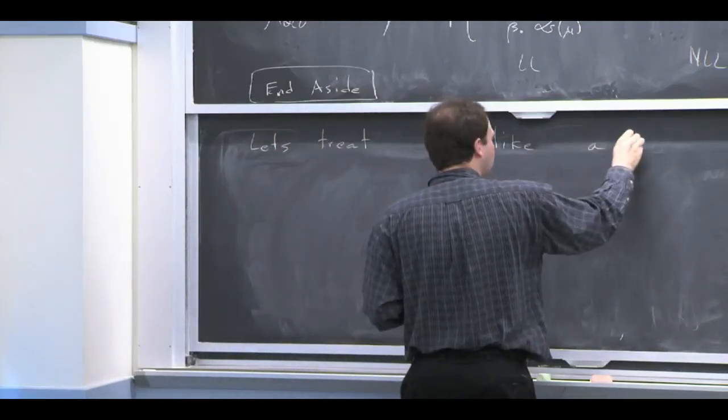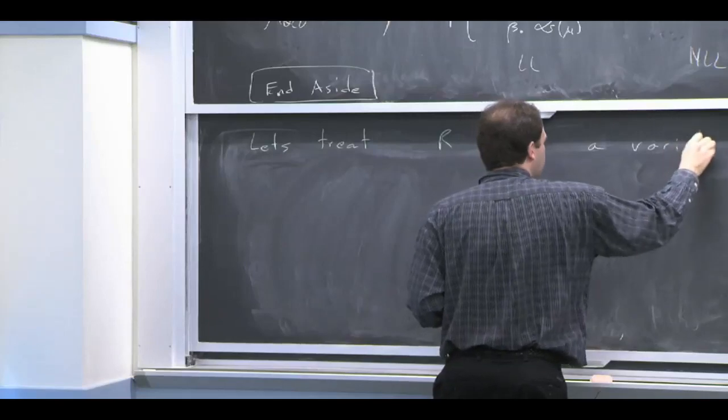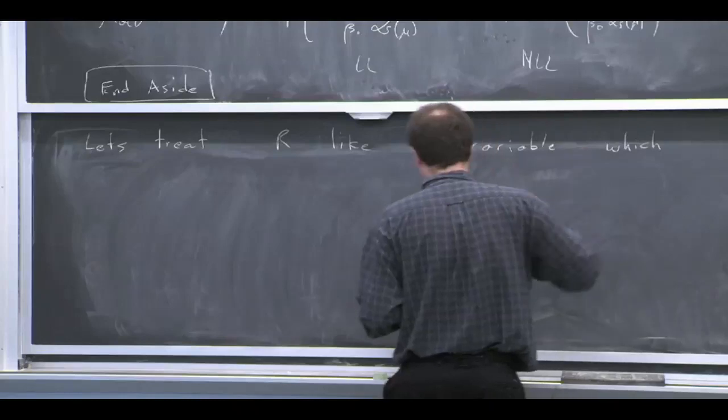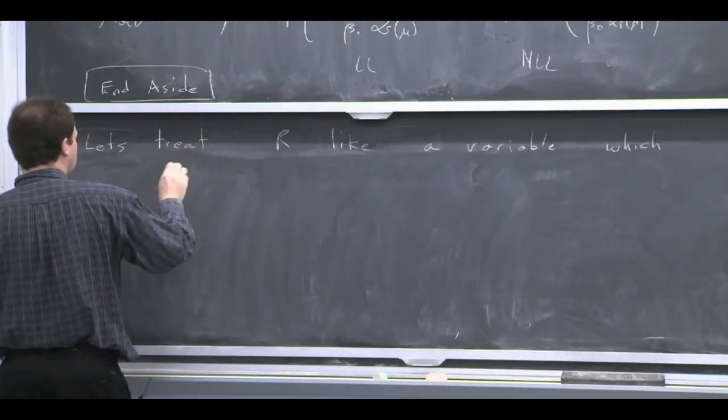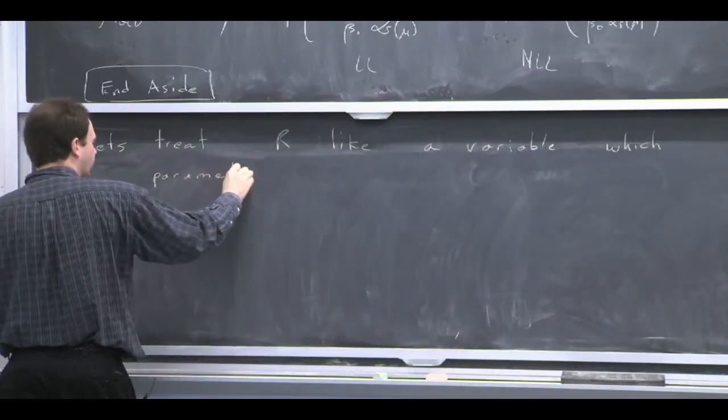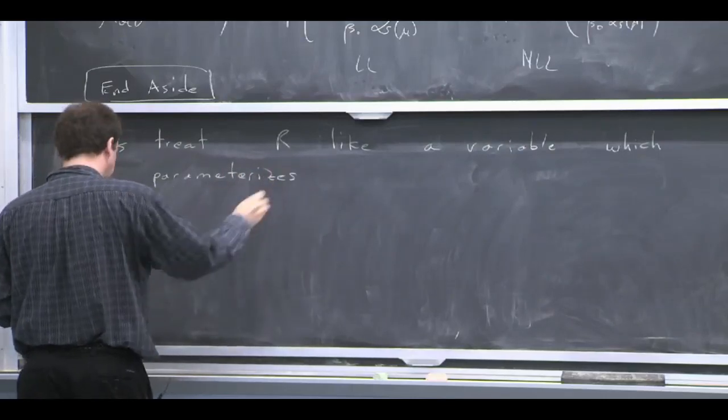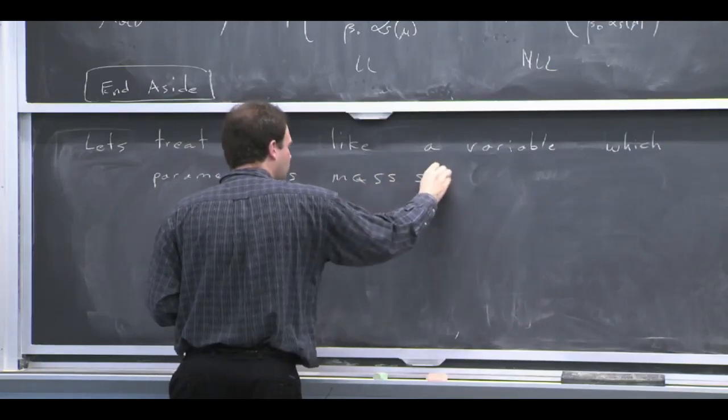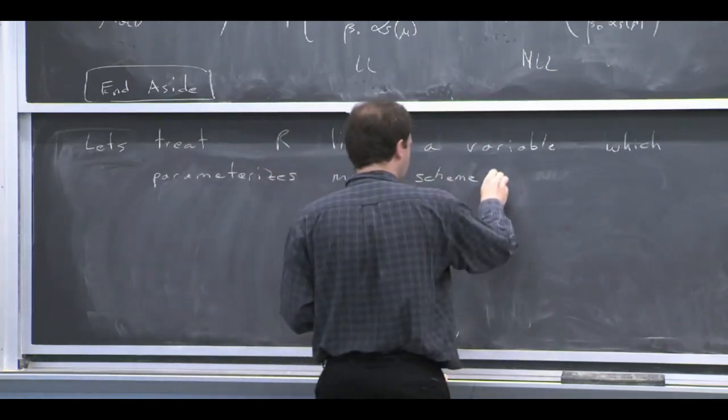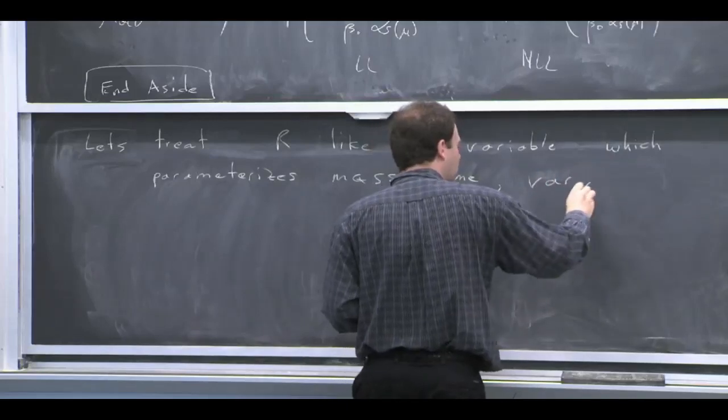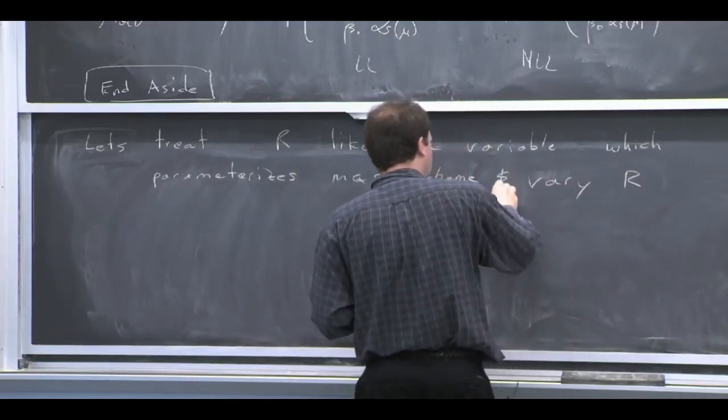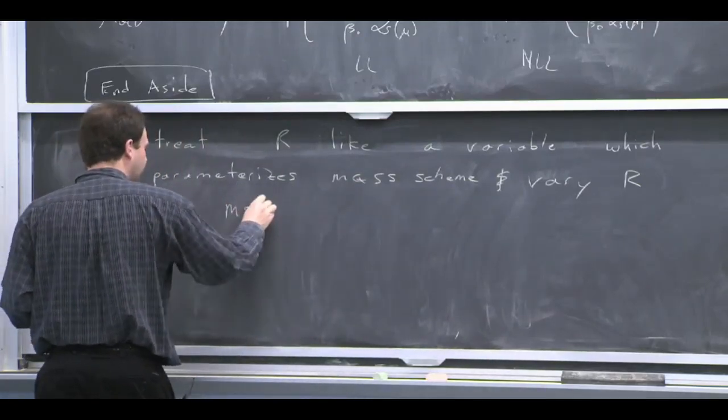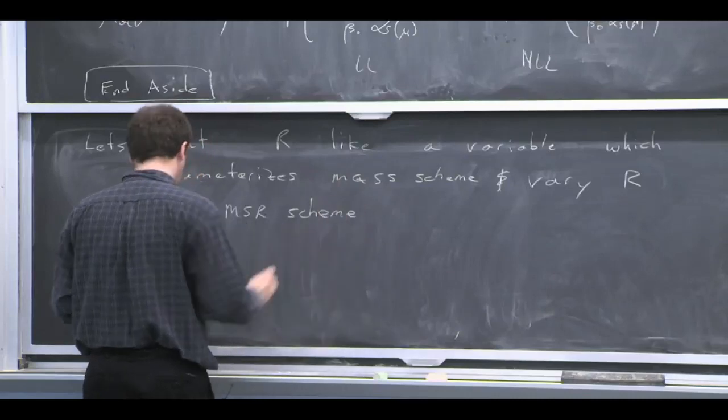So we have a cutoff, and we already said that we can treat R as a variable that parametrizes the mass scheme. And so we can vary R in this MSR scheme, just like we'd vary mu in the MS bar scheme.